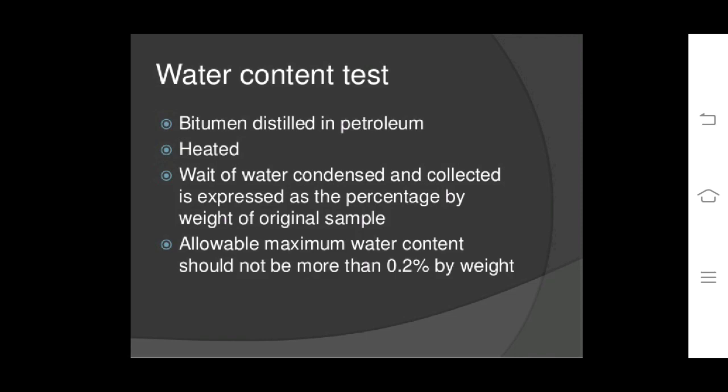Water content test: the bitumen is distilled in petroleum and heated. The weight of water condensed and collected is expressed as the percentage by weight of the original sample. The allowable maximum water content in bitumen should not be more than 0.2% by weight.